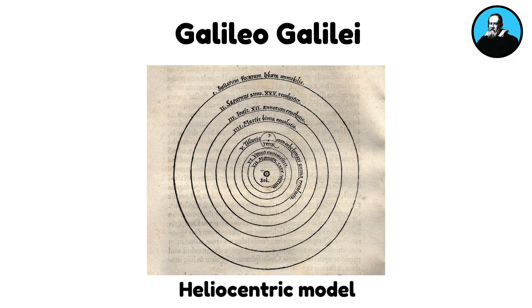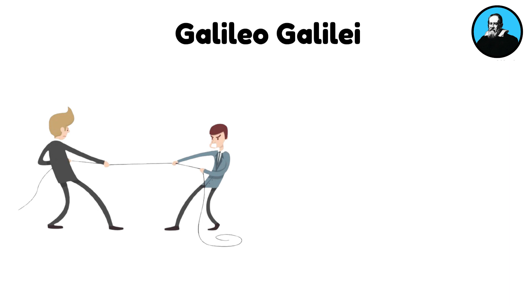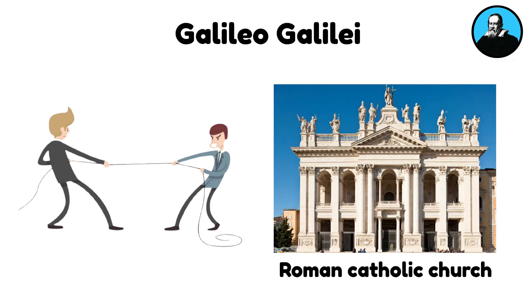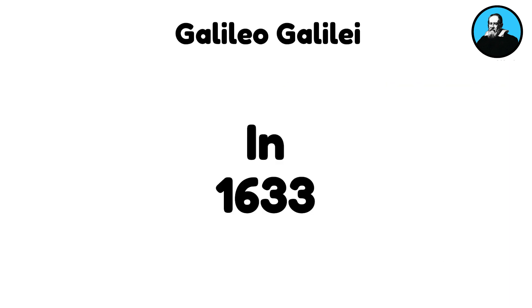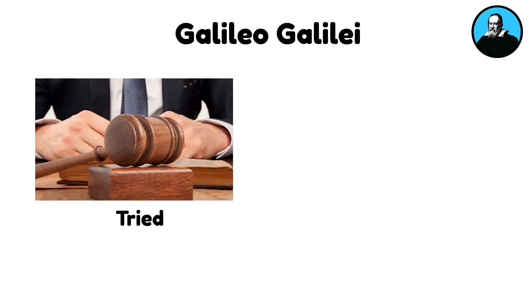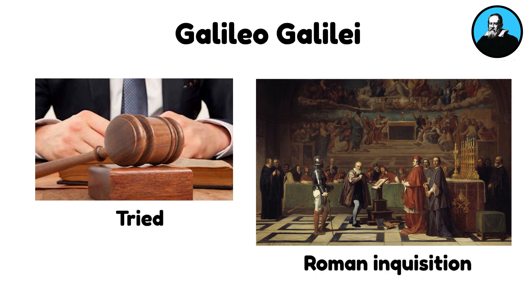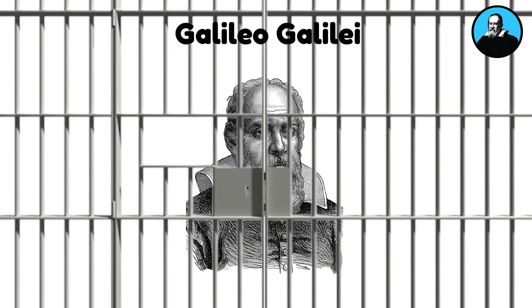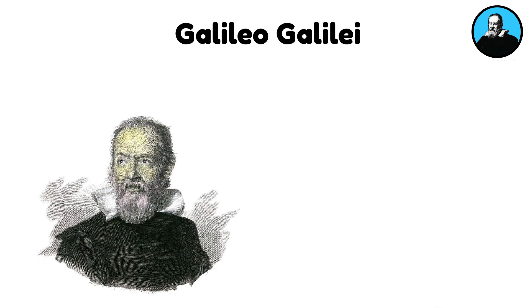Galileo's advocacy for the heliocentric model brought him into conflict with the Roman Catholic Church. In 1633, he was tried by the Roman Inquisition and found vehemently suspect of heresy, resulting in house arrest for the remainder of his life.